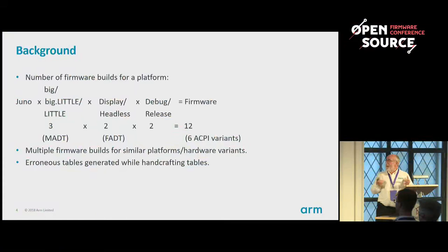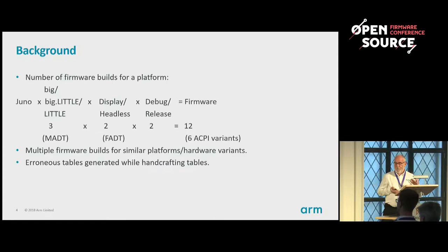If we take just a single ARM platform, we found we were producing a lot of versions of firmware. We have this big-little setup, but for various reasons we wanted firmware builds that only use the big or only use the little cores. That meant we had a lot of variants on the ACPI tables — minor changes — but the minor changes you have to maintain and test, and it can be difficult to get it right. We found it was expensive.